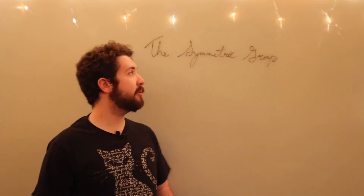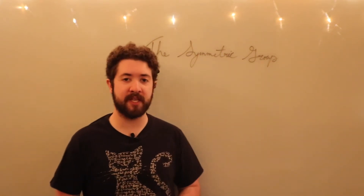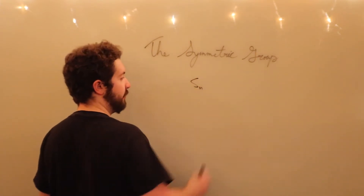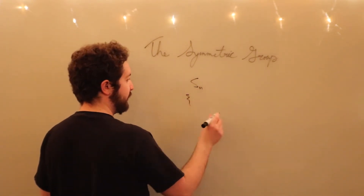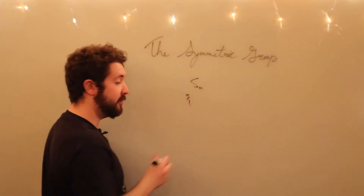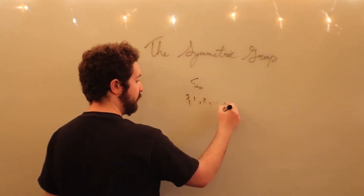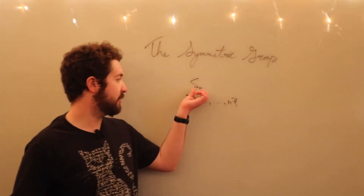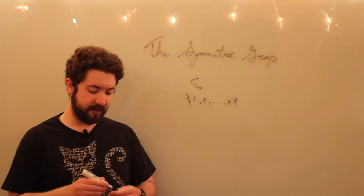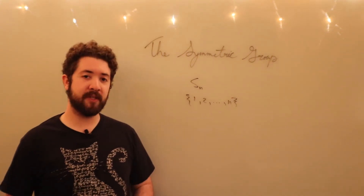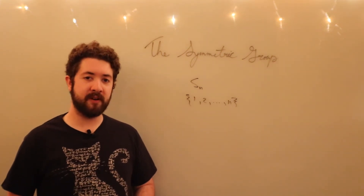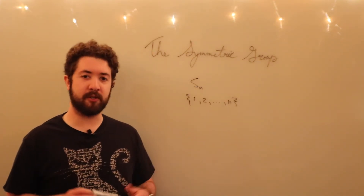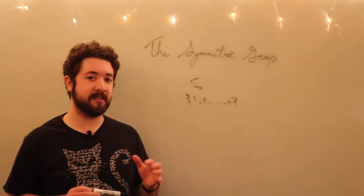Welcome back. Today we're going to be talking about the symmetric group. Now you may be thinking we've already talked about the symmetric group — that would be S sub n, the set of all permutations of the set {1, 2, 3, ..., n}, the symmetric group on n symbols. We have already talked about this, but the symmetric group is really important theoretically and practically. It's probably the most important single group, and there's much more to say about it.